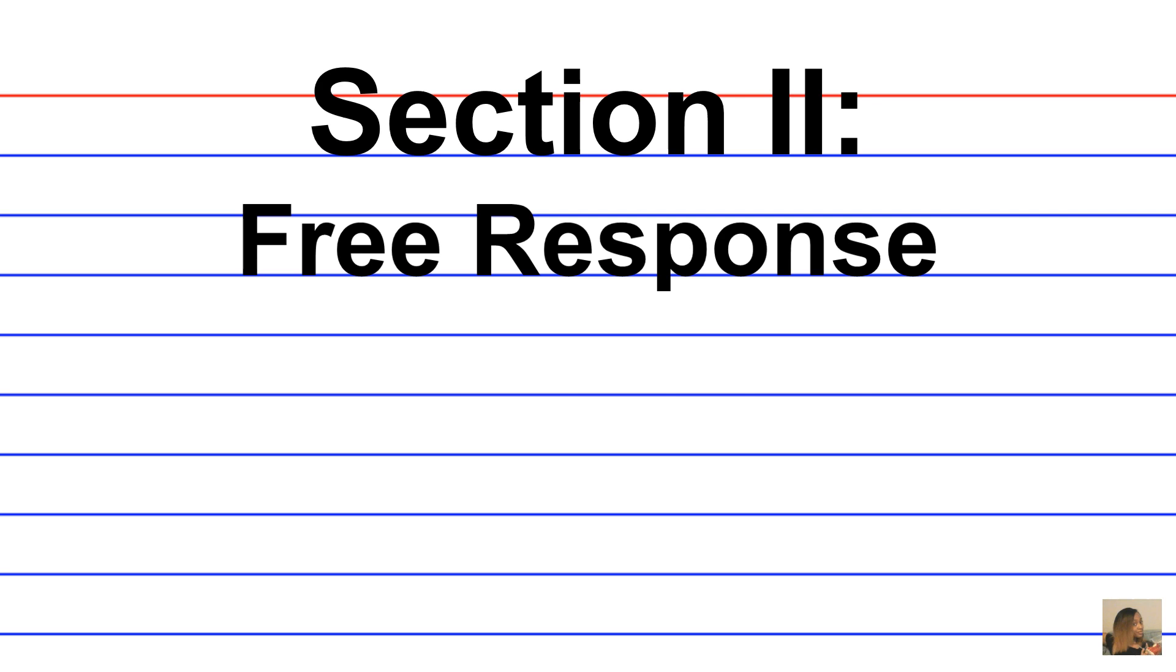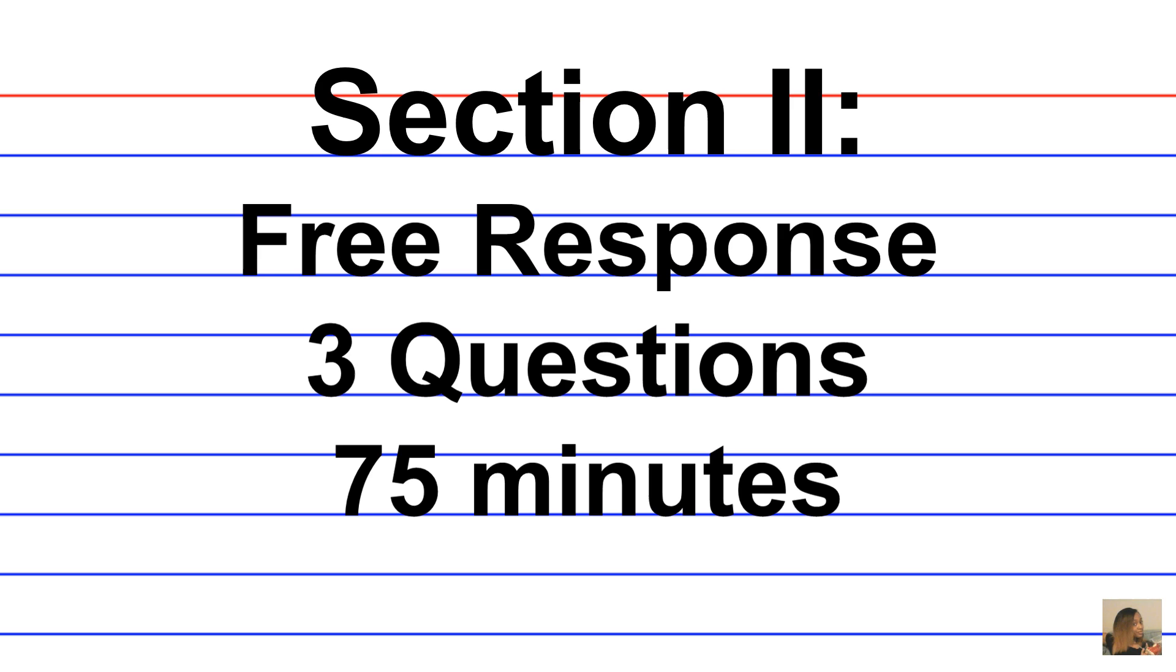Remember that Section 2 consists of free response questions. There are three questions that should be formatted as short essay answers, and you have 75 minutes to complete them, so allocate your time properly. The free response section is 50% of your exam score. You're required to define and explain and apply geographic concepts and also interpret geographic data.